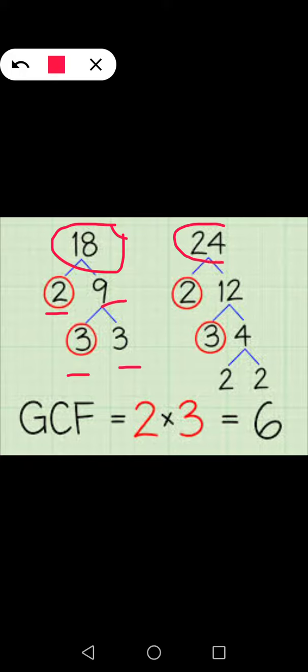Now we write 24. The two factors of 24 are 2 and 12. Further, 12 has two factors: 3 and 4. 3 cannot be divided further, but 4 can be divided further. We see 4 equals 2 and 2.